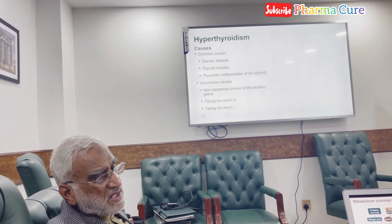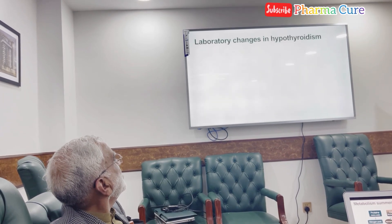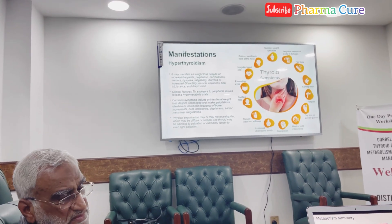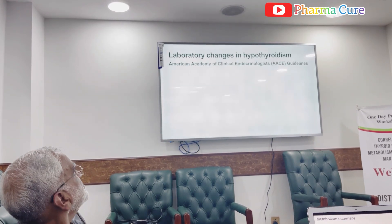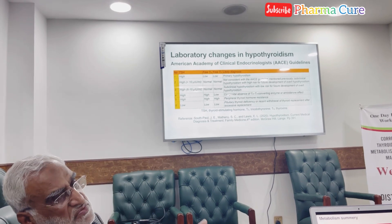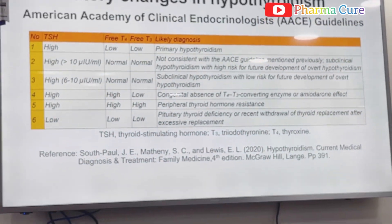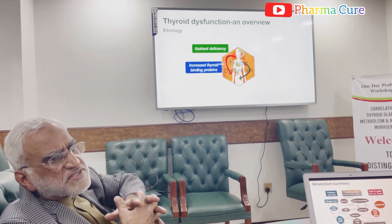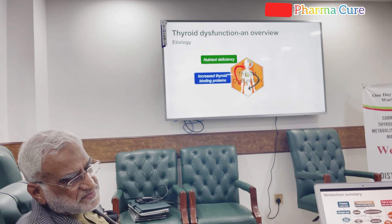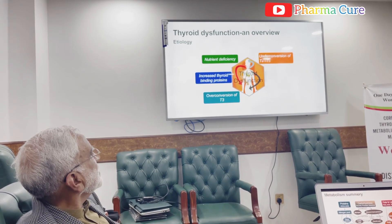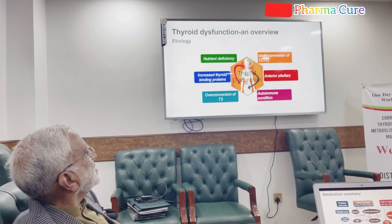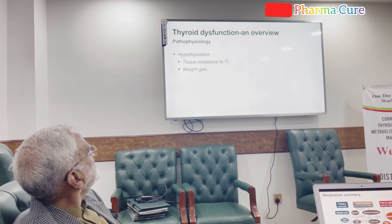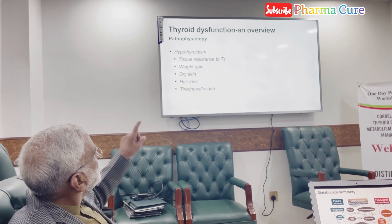Hypothyroidism. We will discuss these things first. This is a thyroid profile — the thyroid panel — covering assessments such as: thyroid distribution, nutrient depletions, and increased thyroid binding proteins.